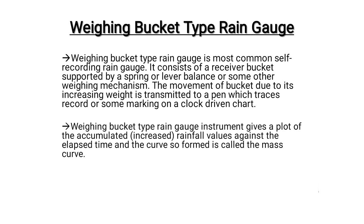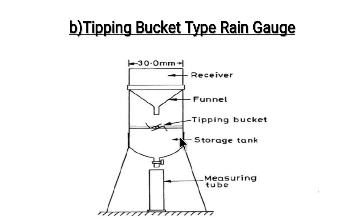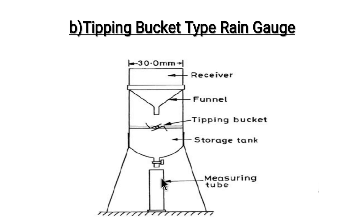The next is the tipping bucket type rain gauge. The receiving vessel is connected to a funnel, and 0.25 mm depth of water causes the tipping bucket to tip. Between tips, a graph is recorded. There is a storage tank, a measuring tube, a pen arm with a clock-driven drum, and a drinking funnel and reservoir also kept here.